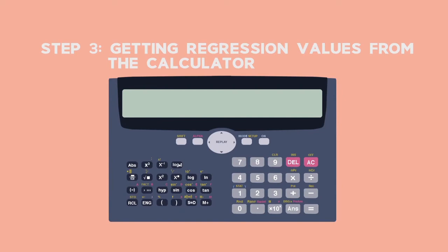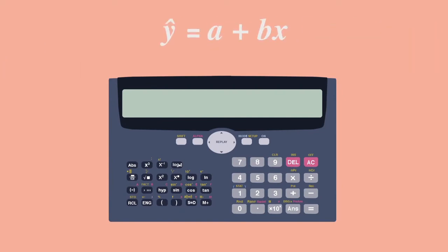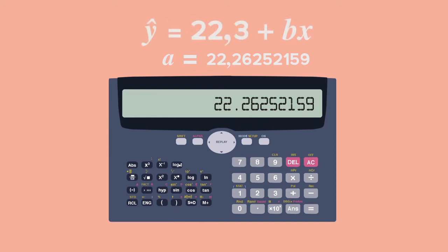Step 3. Getting regression values from the calculator. Select Option 1 and then Equals to get the value of the Y intercept. A is equal to 22.262 and so on. Round it off to one decimal place. A equals 22.3.